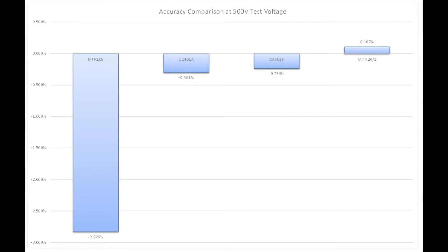Okay this is the overall accuracy at the 500 volt test voltage. You can see the MTR105 minus 2.8%, minus 0.3% for the 1461A, Chauvin Arnoux is minus 0.236 and the MIT 420 is 0.107, so it's actually the most accurate of all the units across the 500 volt test voltage.